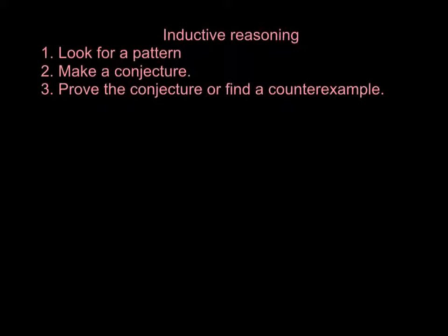So, to show that a conjecture is always true, you must prove it. Inductive reasoning. To show that a conjecture is always true, you must prove it. To show that a conjecture is false, you only have to find one example in which the conjecture is not true. This is called a counterexample. Now, that's a vocab word. A counterexample is proving something false. All you have to do is prove one thing false, and you've just proved a counterexample. A counterexample can be a drawing, a statement, or a number, like proving it mathematically.